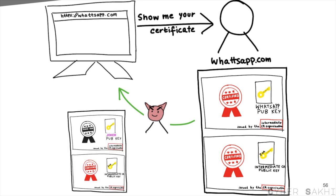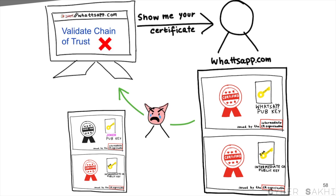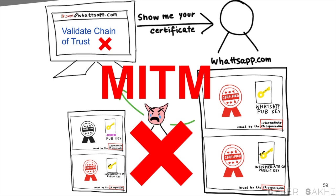So how does this stop Joker? Joker tries to give your browser a bogus public key, but your browser says: where's the certificate for that public key, and who signed it? Joker can't produce a valid CA signature for the domain because the real CA won't sign his fake request. If he produces a forged signature, your browser or phone quickly sees it's invalid and throws an error. Result: no more successful man-in-the-middle attacks, because the fake public key cannot pass the certificate check. Always pay attention to your browser's warnings — never click through when it says the certificate is untrusted or invalid. You might be talking to a Joker in the middle. Remember: digital certificates equals authenticity guaranteed. Stay secure, folks. May no Joker come between you and your peace of mind. See you next time.